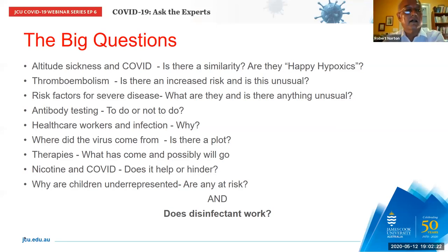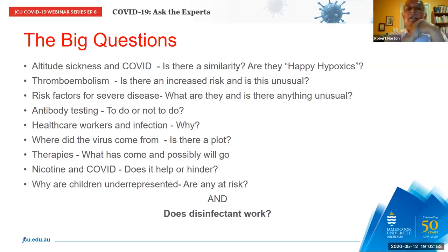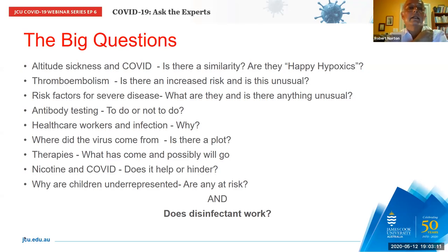Thank you very much. I'm just going to quickly go through a few questions that come up periodically. I'll begin with the view that there may be a relationship between altitude sickness and COVID-19 — is there a similarity? Both altitude sickness and adult respiratory distress syndrome, which is what you get with COVID, are non-cardiogenic pulmonary edema, so yes they are the same problem, but the cause and pathogenesis is quite different.